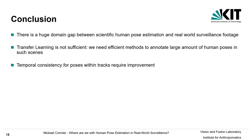In conclusion, there is a huge domain gap between scientific human pose estimation on academic datasets and real world surveillance footage. Transfer learning is not sufficient — we need more efficient methods to annotate large amounts of human pose in such scenes in order to facilitate supervised learning. Furthermore, temporal consistency for pose within tracks requires improvement, as pose over time is unstable — a problem for downstream modules targeted for action recognition.